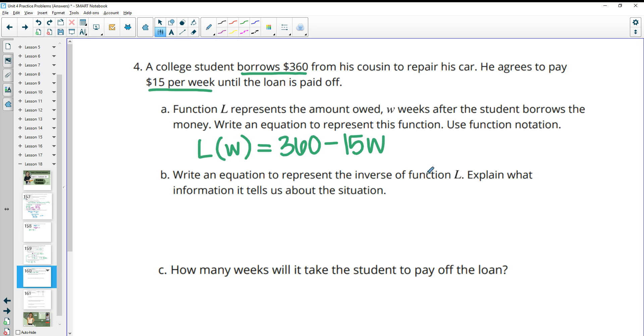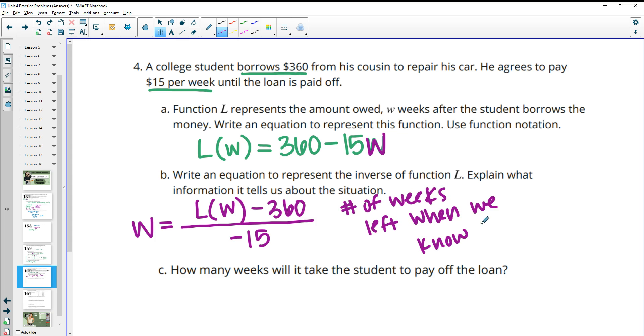Then it wants us to write an equation to represent the inverse of this function and explain what it tells us. So again, to go backwards, we want to do order of operations backwards from the variable. If we plugged in something here, we would be multiplying it by negative 15, and then adding that 360. So now we'll want to take L of W, subtract the 360 first, then divide by the negative 15. That's going to get us W. So this is going to tell us the number of weeks we have left to pay when we know a certain amount of money that we have left to pay.